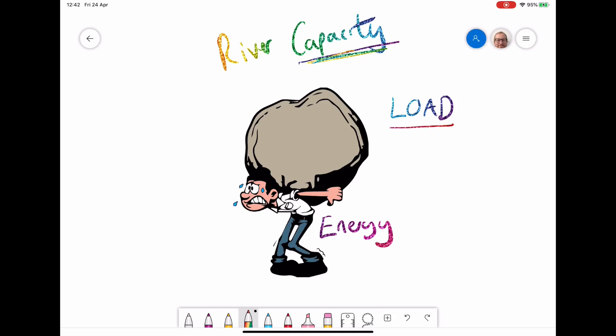Therefore, if we get an increase in the load, and this can be due to lots of erosion, then what will happen is the river won't have the energy to carry it. And therefore, we will get higher deposition rates when the load increases.